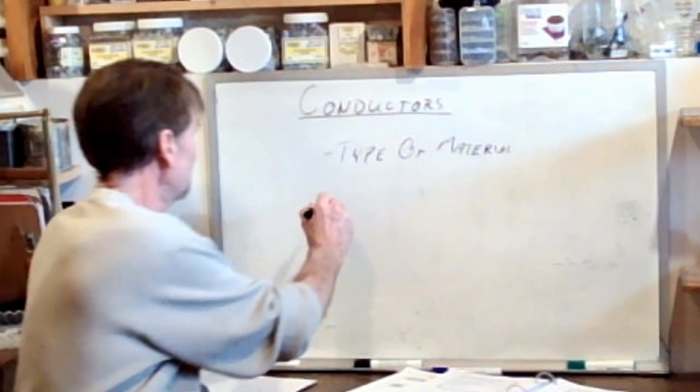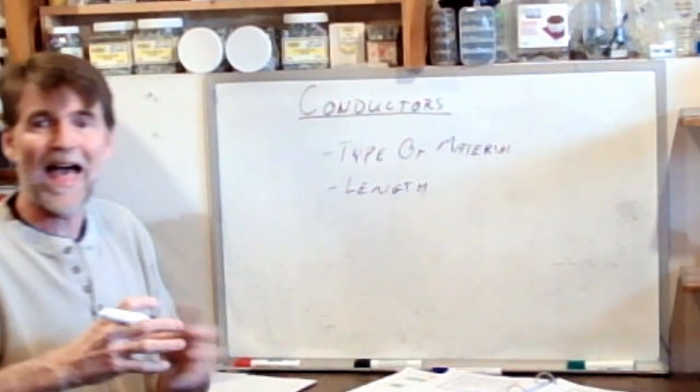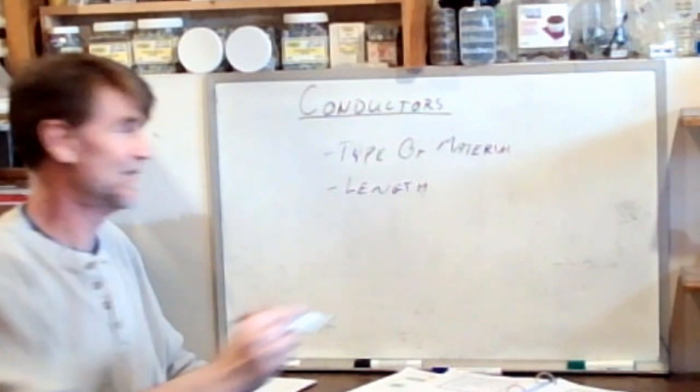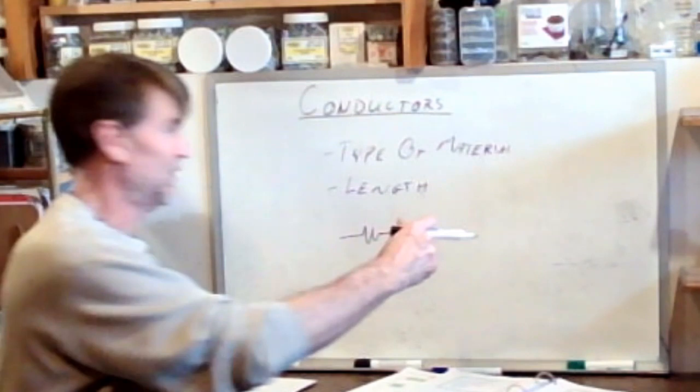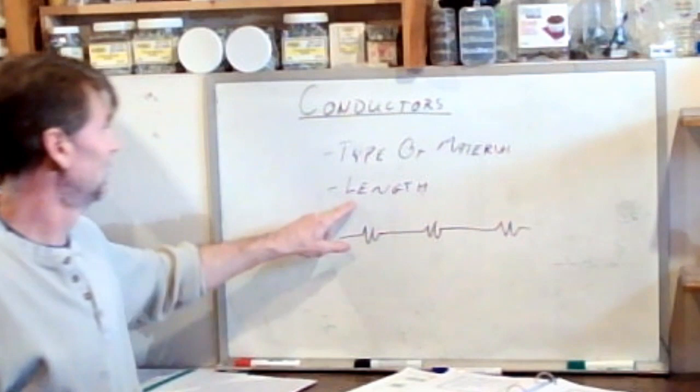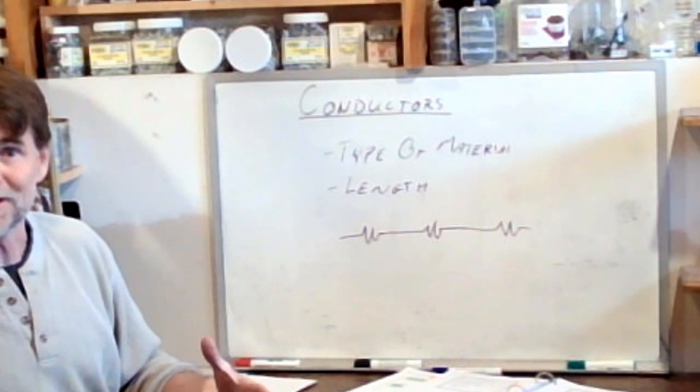The length matters. As a conductor is longer, it has the effect of resistors connected in series. So the conductor offers a little bit of resistance. If it's longer, it offers a little bit more resistance. If it's longer, a little bit more. Okay? So the length of the conductor, as the conductor gets longer, it offers more resistance.